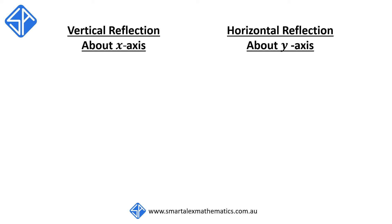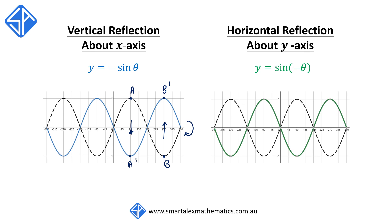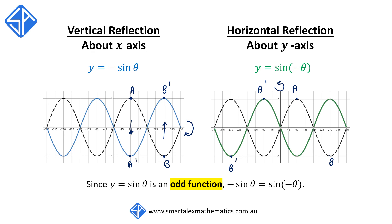The last two transformations are vertical reflection and horizontal reflection. When we reflect the graph vertically, we flip it about the x-axis, giving the equation y equals negative sine theta. Points a and b flip to a' and b' in opposite halves. When we reflect about the y-axis, the equation becomes y equals sine of negative theta. Points a and b map to a' and b' mirrored across the y-axis. These two look the same because sine theta is an odd function, satisfying the relationship: negative sine theta equals sine of negative theta.